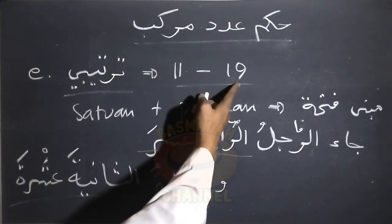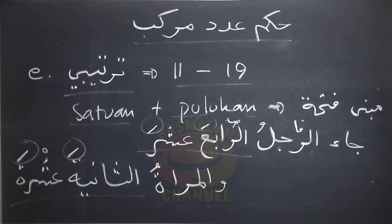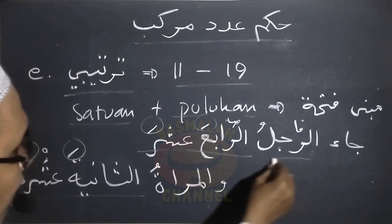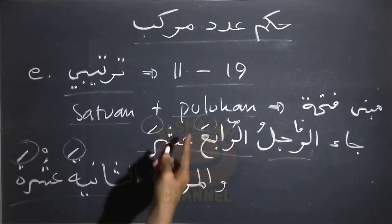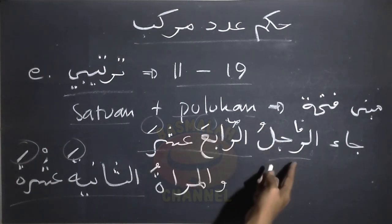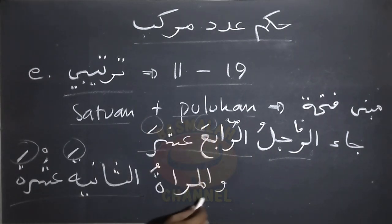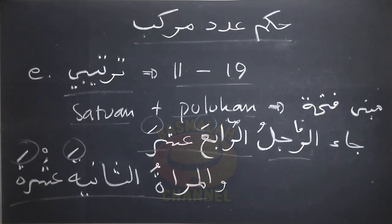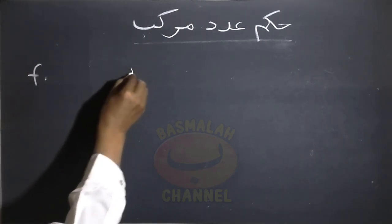Terkait dengan ketentuan untuk adat tartibi, hukum daripada bilangan 11 hingga 19 baik pada satuan maupun puluhannya semuanya dimabnikan fathah. Pada contoh ini makdudnya dalam keadaan rafa' sebagai fa'el, dan adatnya di sini sebagai naat bagi lafaz Ar-Rojul. Sekalipun dalam mahal rafa' sebagai naat bagi makdud yang mahal rafa' juga, namun di sini satuan dan puluhannya tetap dimabnikan fathah. Demikian pula pada contoh yang kedua — Wal Mar'atu Attaniyata Ashrota — juga tetap dimabnikan fathah.